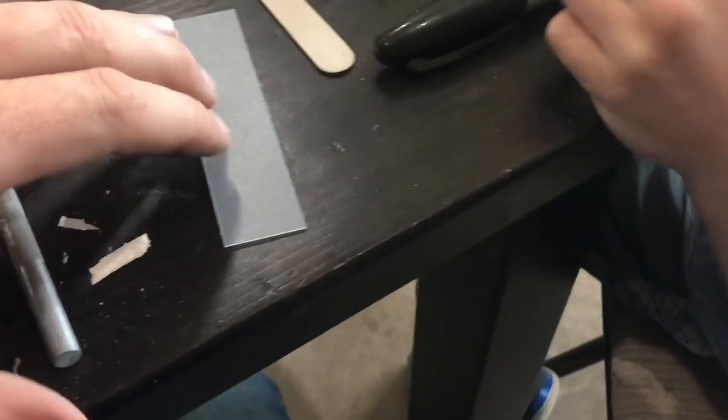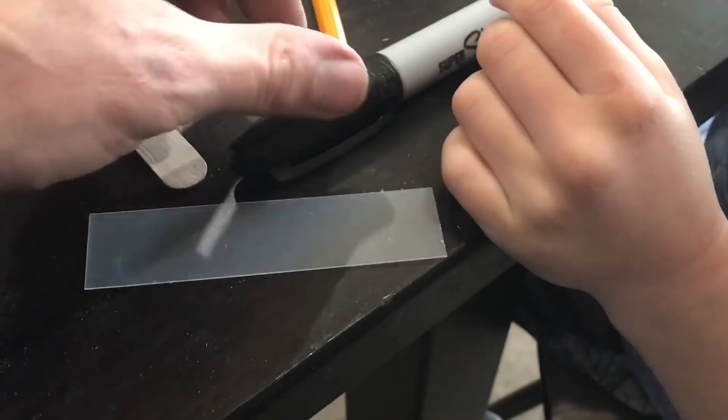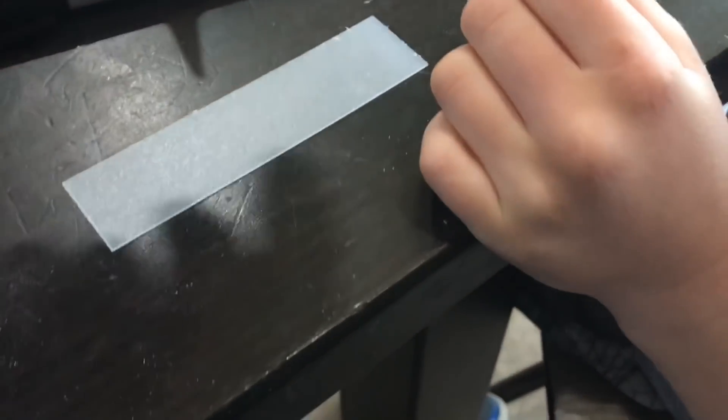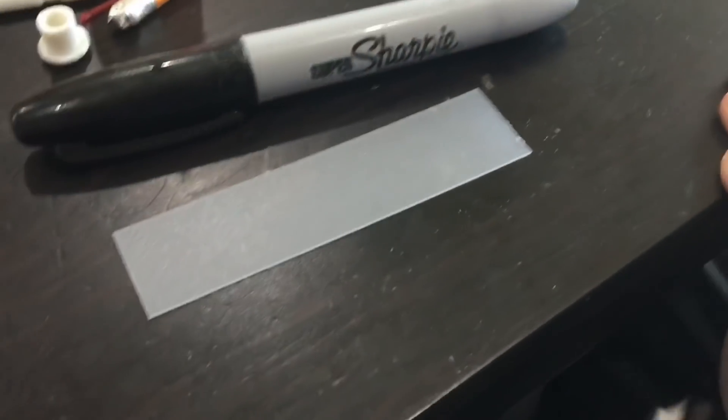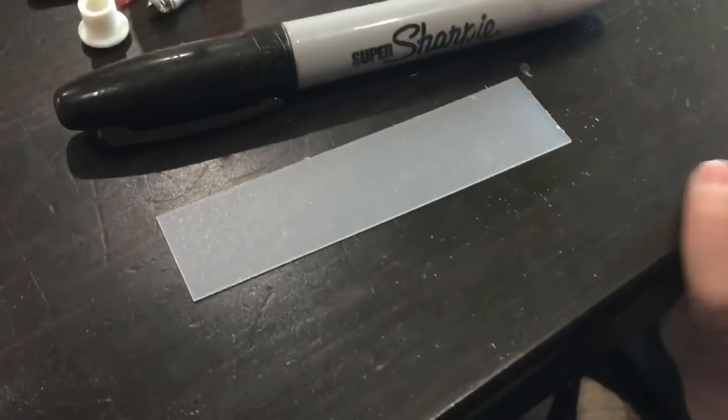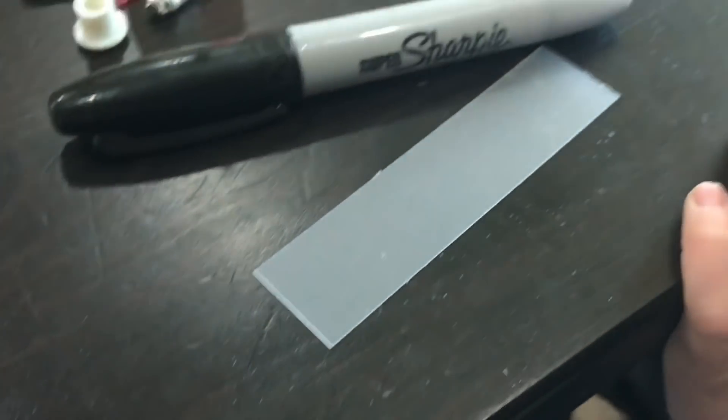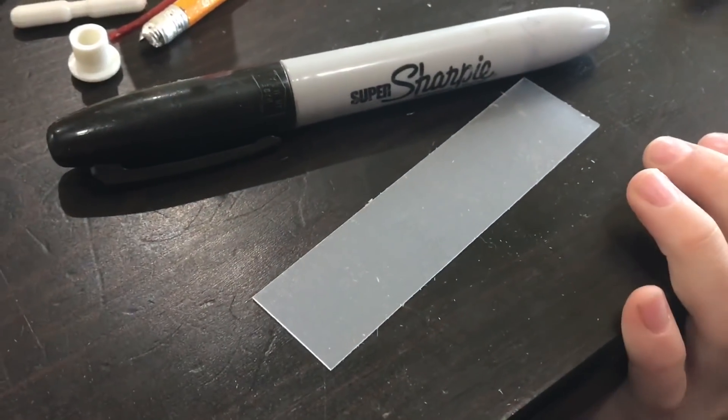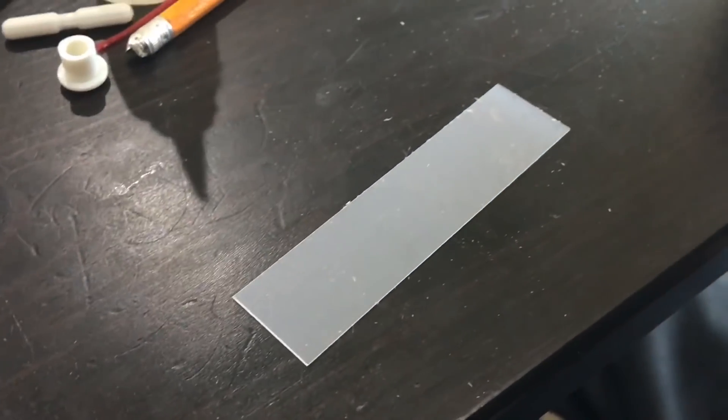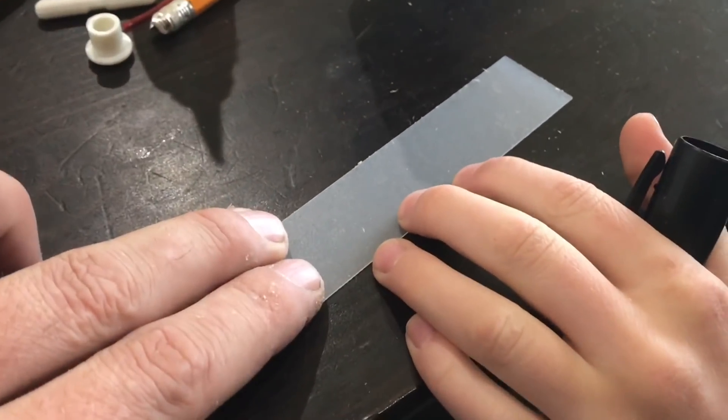Okay Micah. So here's one of our little plastic pieces for the fins, and here's a Sharpie. So I want you to draw on the plastic piece what you want your fin to look like. And then we can cut it out, and we'll use that as a pattern to make the other ones.